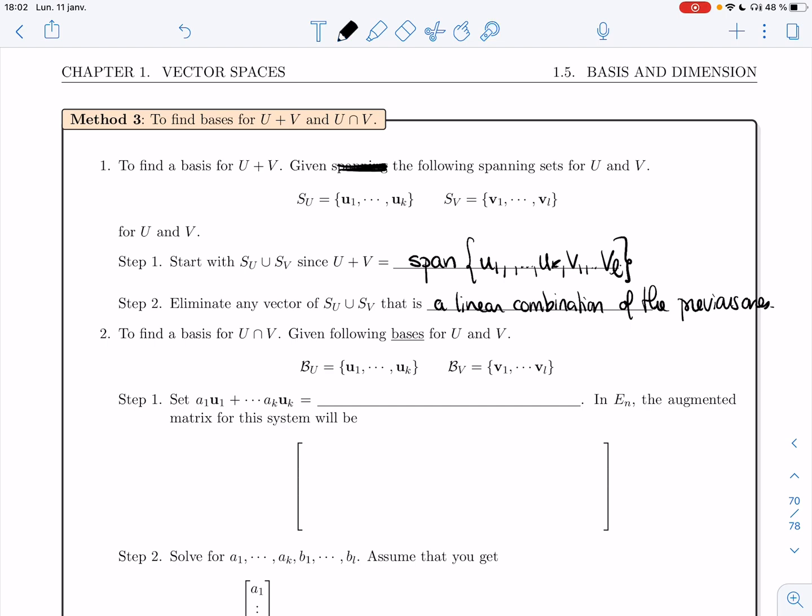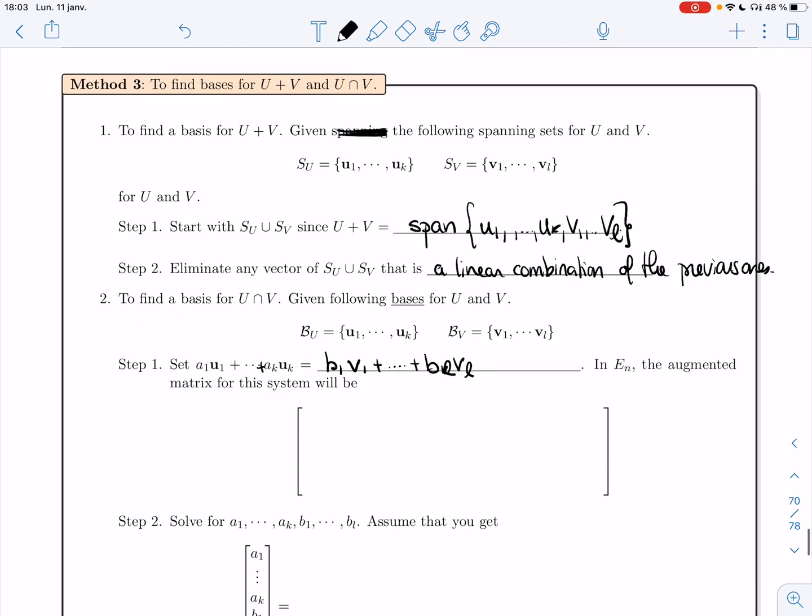All right, so step one: you set a linear combination of U equal to a linear combination of V. That is, a1*u1 + ... + ak*uk equals b1*v1 + ... + bl*vl. You want to solve for a1, ..., ak and b1, ..., bl.